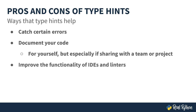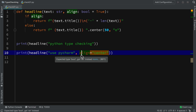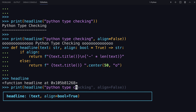Type hints are going to improve the functionality inside of many IDEs and linters. This will enhance the ability for that IDE to do code completion and for it to offer suggestions. You've seen this in a couple of different places, such as inside of PyCharm. You might have also noticed it when using Visual Studio Code, and even in the REPL replacement vPython.